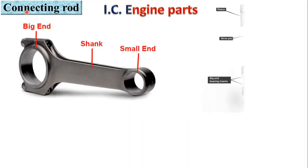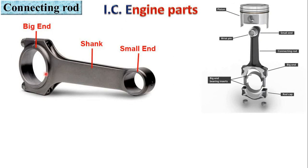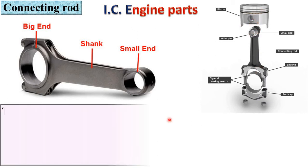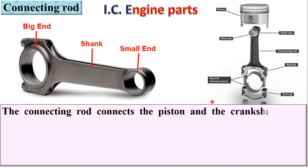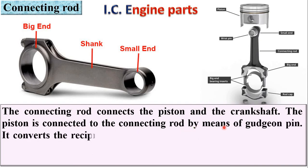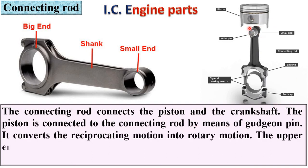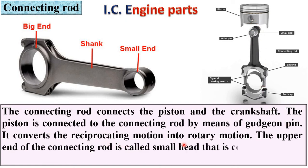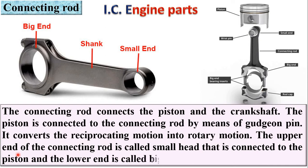Next: connecting rod. This is the image of the connecting rod having two ends — the big end and the small end — and the middle portion is called the shank. The connecting rod connects the piston to the crankshaft. The piston is connected to the connecting rod by means of a gudgeon pin. It converts the reciprocating motion into rotary motion. The upper end is called the small end, connected to the piston, and the lower end is called the big end.